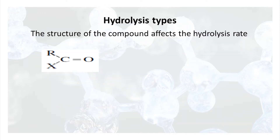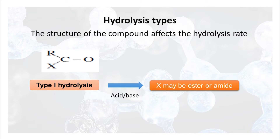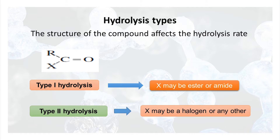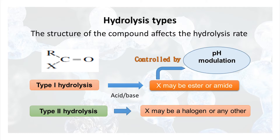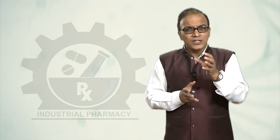Consider the structure RCOx. Depending on what X is, hydrolysis may be divided into two types. In type 1 hydrolysis, X may be an ester or amide. In type 2 hydrolysis, X may be a halogen or another leaving group. Type 1 hydrolysis reactions are catalyzed by acid or base and hence can be well controlled by pH modulation. Please come to the discussion forum with examples of acid- or base-catalyzed hydrolysis.